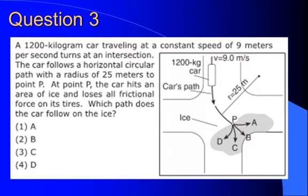Question three: we have a twelve hundred kilogram car traveling at nine meters per second turning at an intersection. If it follows a horizontal circular path with a radius of twenty-five meters to point P, at point P it hits ice and loses all frictional force on its tires. The frictional force was causing the centripetal acceleration — centripetal force was friction. Once that's released, the car will travel in a straight line, continuing as if it's going to hit point B.